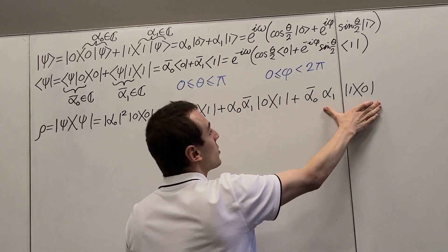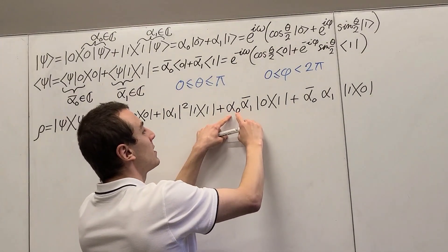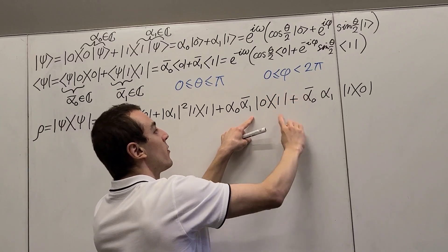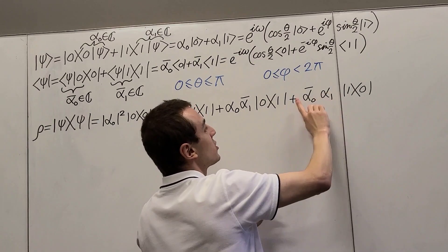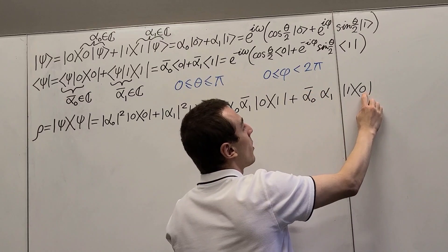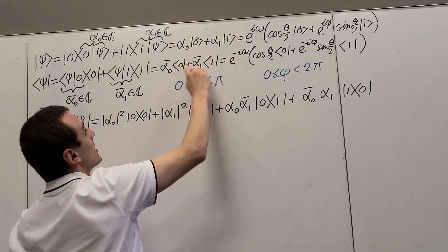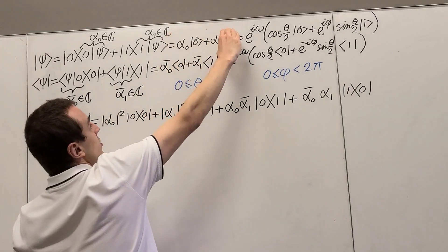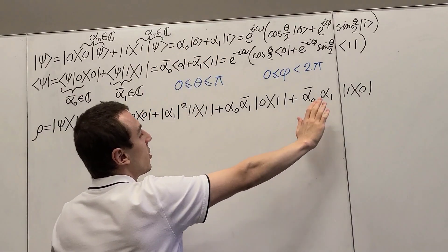These two off-diagonal terms are actually Hermitian adjoints of each other. You can see that when we have alpha zero here, we have the ket version of state zero and the bra version of one, with the complex conjugate on alpha one. And the opposite is true for the other term — it has the complex conjugate on alpha zero and the bra version of zero. These come from the cross terms when we expand the ket and bra separately and multiply them together.